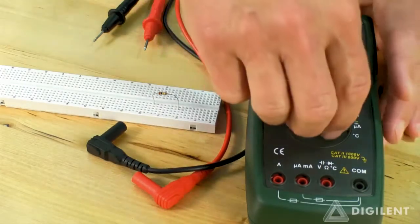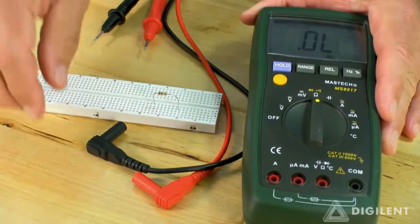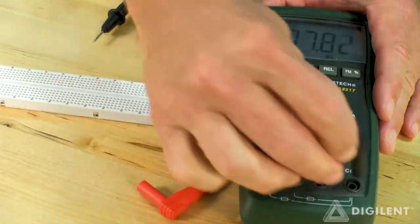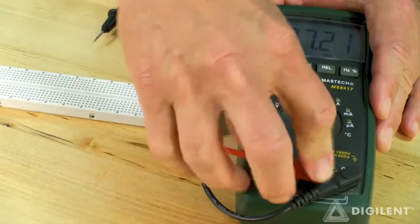To measure resistance, turn the DMM dial to the setting labeled with a Greek letter omega. The DMM leads should be plugged into the COM port and the volt ohm port, the same way we did for our voltage measurements.